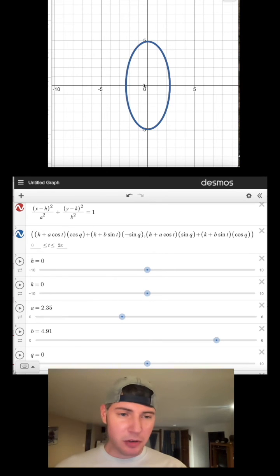If I turn this on, it ends up being right on top of it. Because everything else is the same with the h, the k, the a, and the b. But the only thing difference is this q.